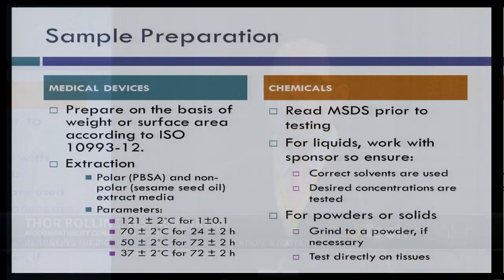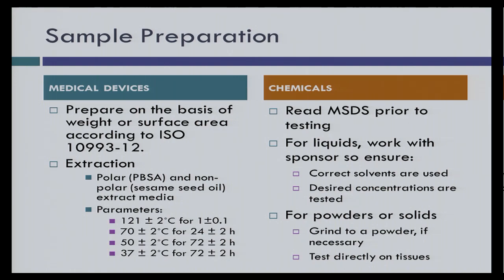In Europe, this in vitro irritation test is already accepted for chemicals, cosmetics, and medical devices. The FDA is not yet accepting it — they're waiting for more robust comparison data between animal and in vitro tests. Through a round robin study at the ISO 10993 level involving 13 labs worldwide, we are generating that comparison data. We believe the in vitro irritation test is actually more sensitive than the animal test, and could be used as a primary screen, with animal testing used only to confirm positive results.